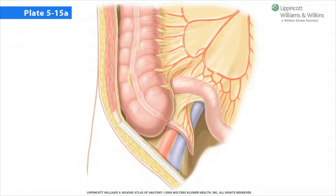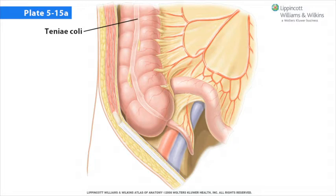The outer longitudinal layer of muscle of the gastrointestinal tract becomes thin at the proximal end of the large intestine, except for three longitudinal bands called the taenia coli, that extend from the cecum to the distal end of the sigmoid colon. Discontinuities in this muscular layer allow segments of the colon to contract independently, assisting in mass movement of colonic contents. The taenia coli are shorter than the intestine, so the walls of the colon bulge out into sacculations called haustra.